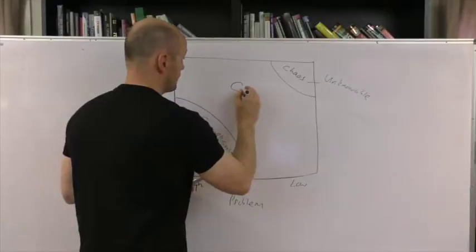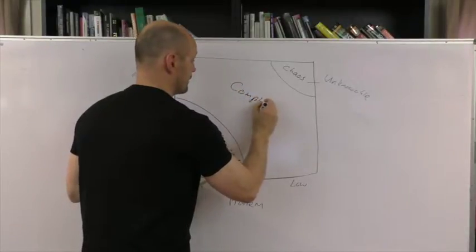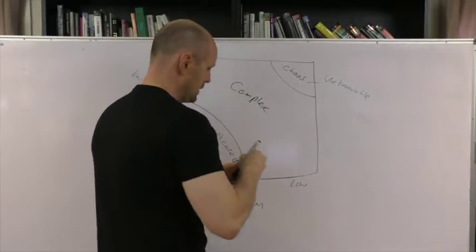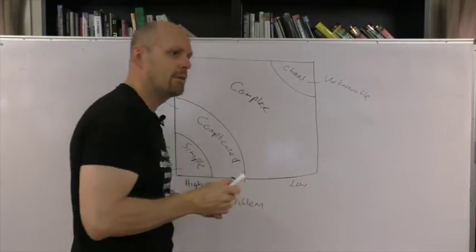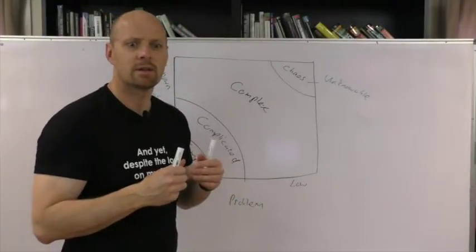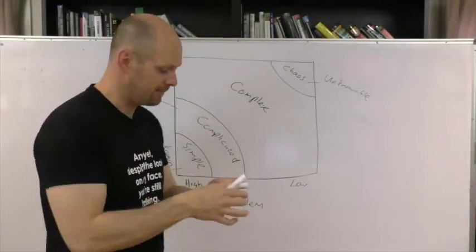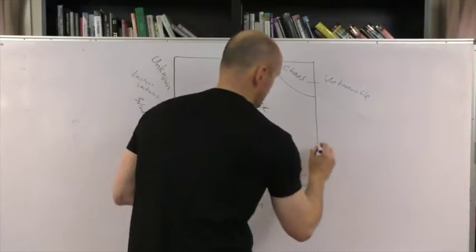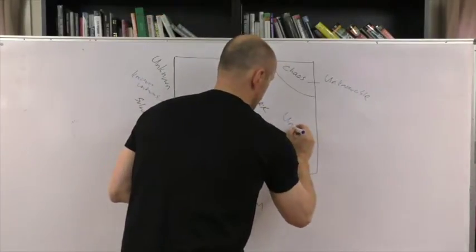have the complex space, which is the space that predominantly sits in the design thinking area. We call this the unknown problem space.